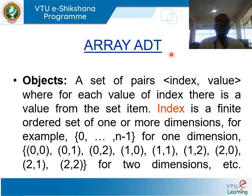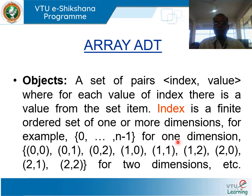Array as an abstract data type. Objects: a set of pairs consisting of an index and a value, where for each value of index there is a value from the set item. Index is a finite ordered set of one or more dimensions. For example, {0, 1, 2, ..., n-1} for one dimension, or pairs like {0,0}, {0,1}, {0,2}, {1,0}, {1,1}, {1,2}, {2,0}, {2,1}, {2,2} for two dimensions.